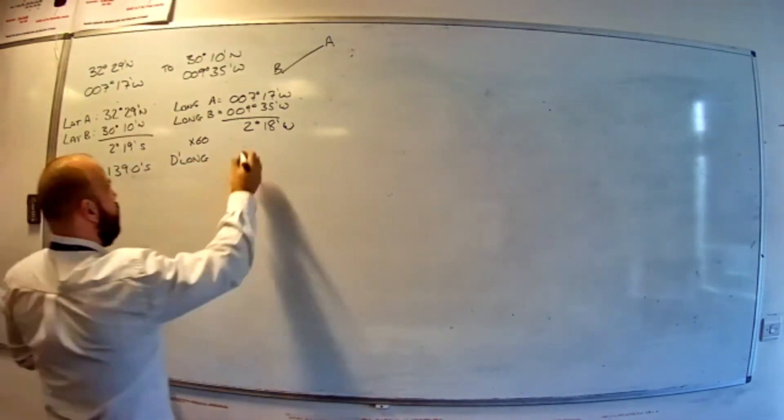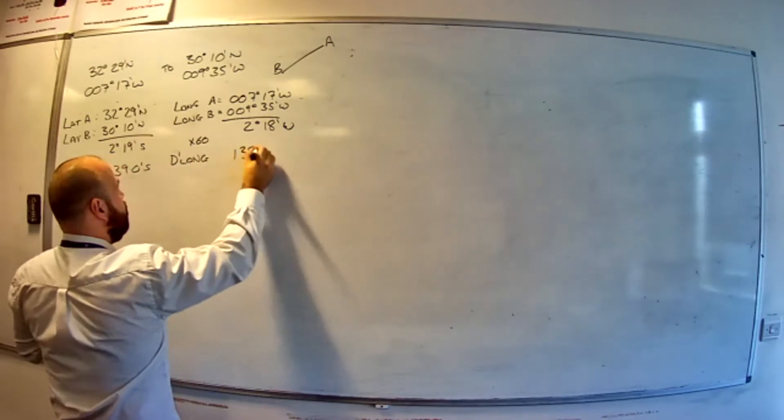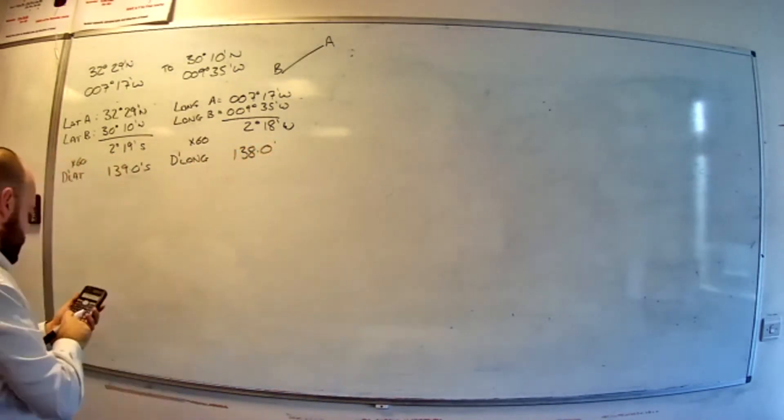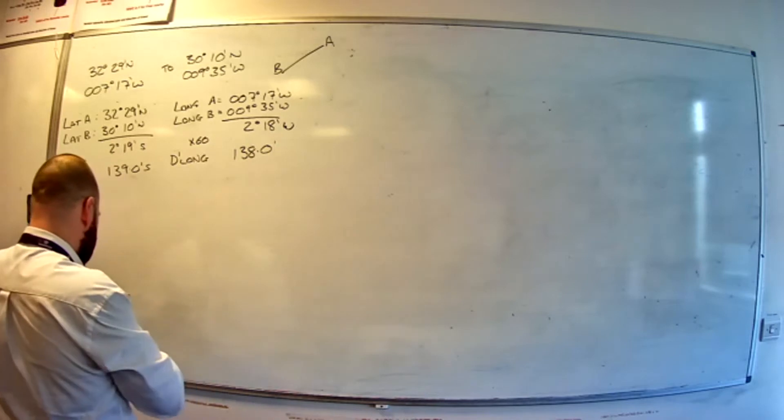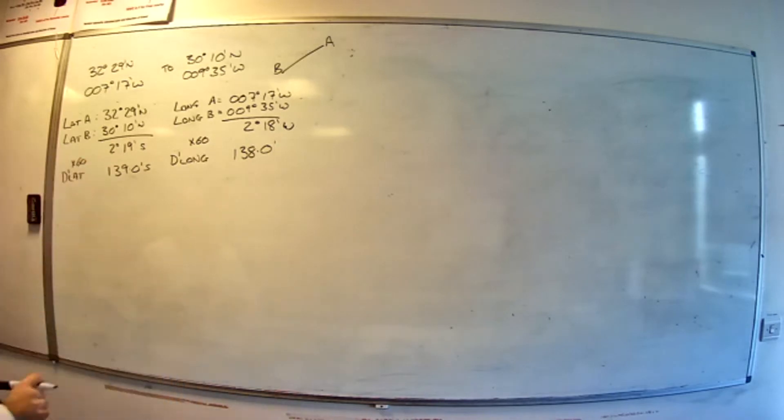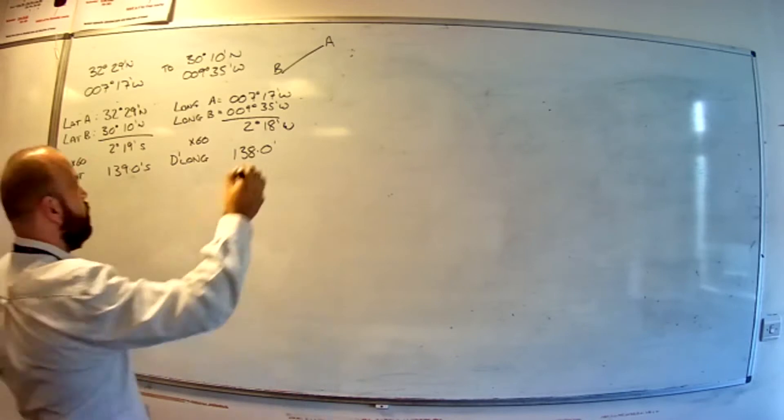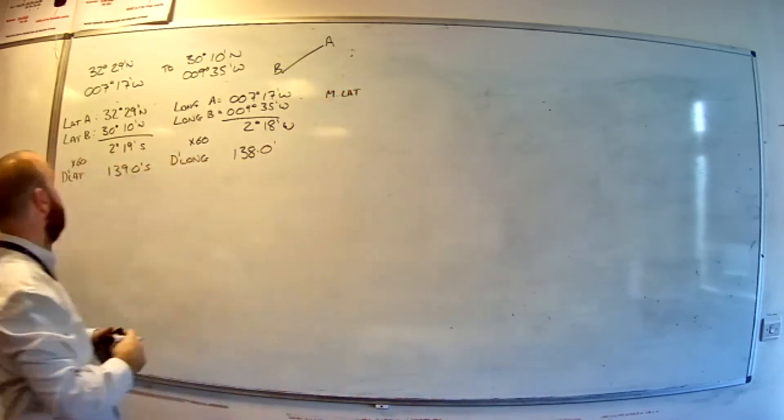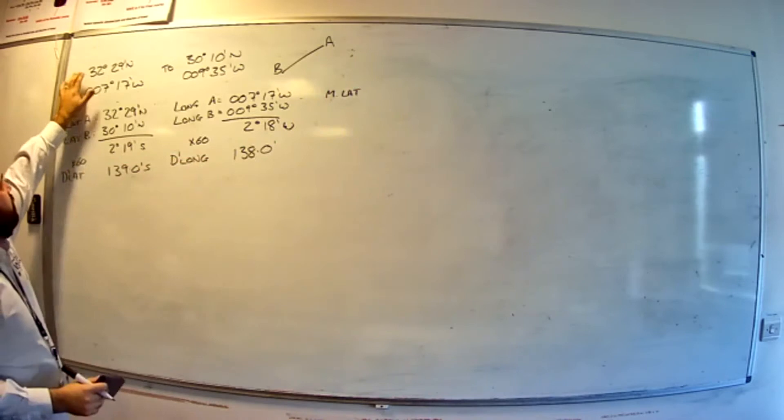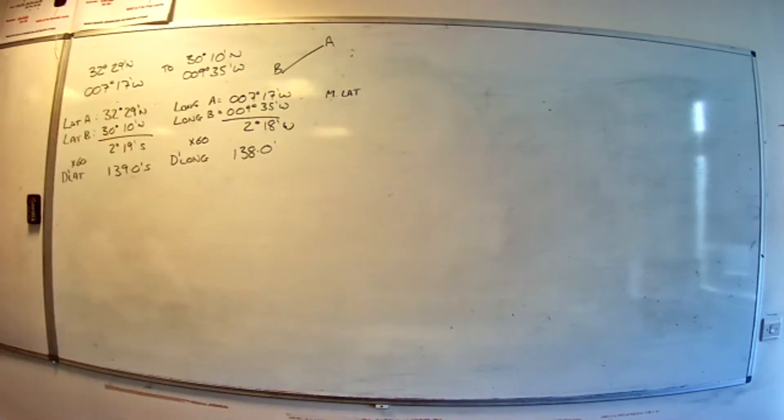So DLong 138.0. Right. So now what we need to do is work out our mean latitude. Mean latitude is just average latitude. So what's the average between 32 degrees 29 and 30 degrees 10?